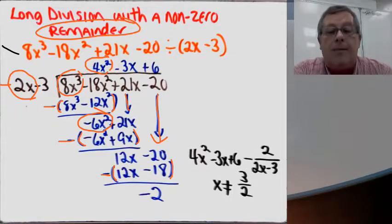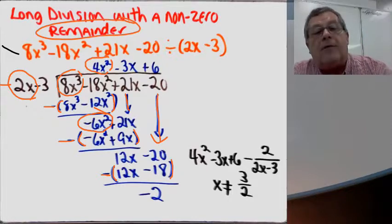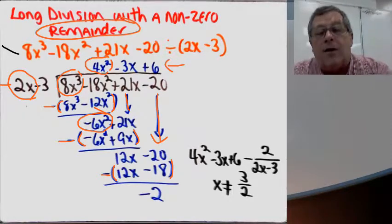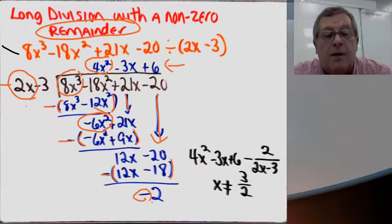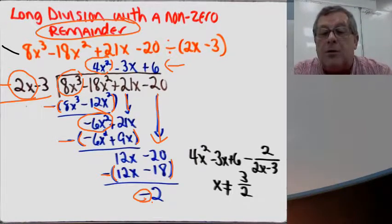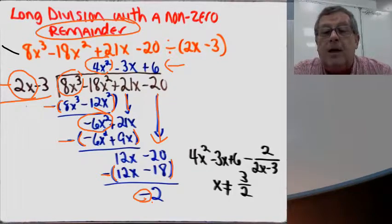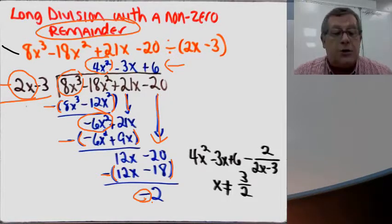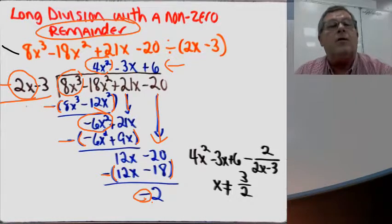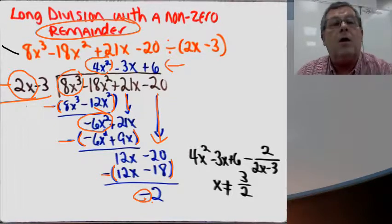I'm so happy! How do I write this? I have my quotient 4x squared minus 3x plus 6, and a remainder of minus 2, so I write plus minus 2 over the divisor 2x minus 3. Since I have an x in the denominator, I cannot divide by zero, so x cannot equal 3/2. And there we go — long division with a non-zero remainder!